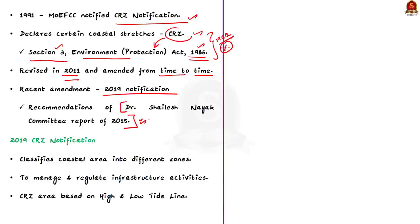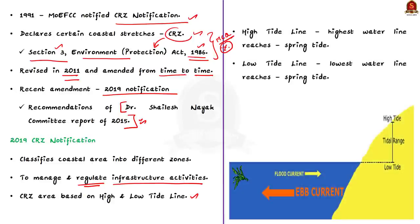The Coastal Regulation Zone 2019 notification classifies coastal areas into different zones to manage and regulate infrastructural activities. The coastal regulation zone area is based on the high tide line and low tide line. High tide line means the line on the land which the highest water level reaches during spring tide, and low tide line means the line on which the lowest water level reaches during spring tide.